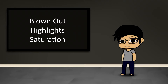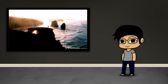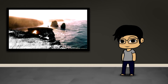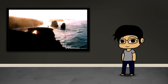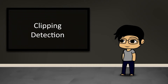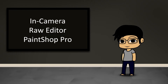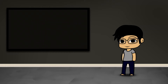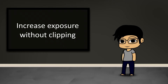Clipping can occur at the top end when you have pixels that are too bright and you have no detail, or it can occur at the bottom end where areas of the image are too dark and you also lose detail. What I'm going to cover today is ways you can detect clipping at different stages of your creation process, how to do it in PaintShop Pro, and at the very end one way you can overcome clipping if you're trying to increase the exposure of your image.